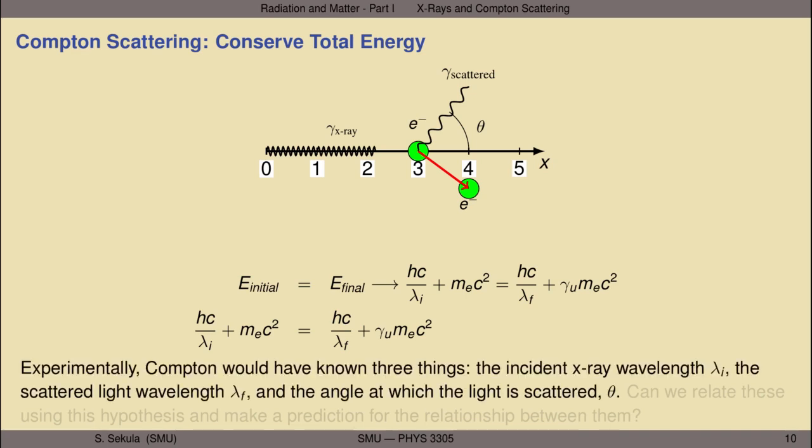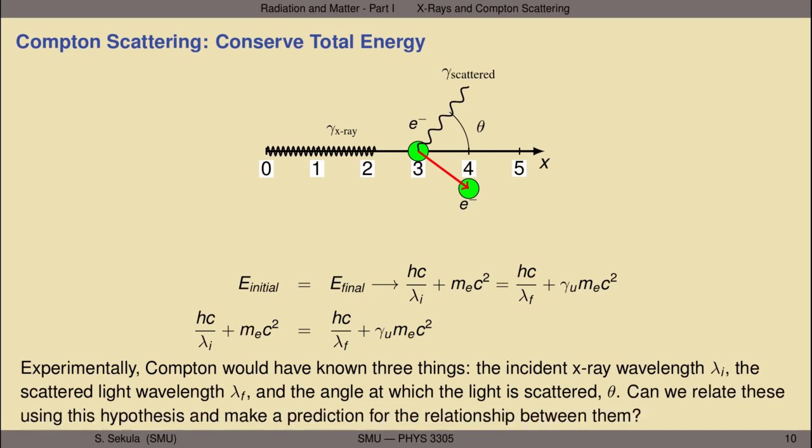From his experiment, Compton would have known three things: the incident x-ray wavelength λ_i, the scattered light wavelength λ_f, and the scattering angle of the light θ. The question is whether we can use algebra — possibly pages of it — to relate these things using the hypothesis of a particle-like scattering process between light quanta and an electron, and make a prediction for the relationship between these three quantities.